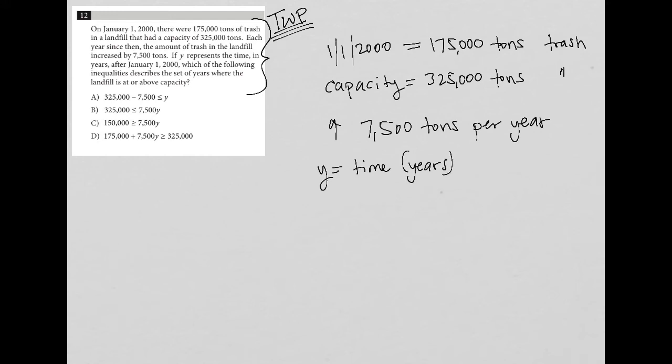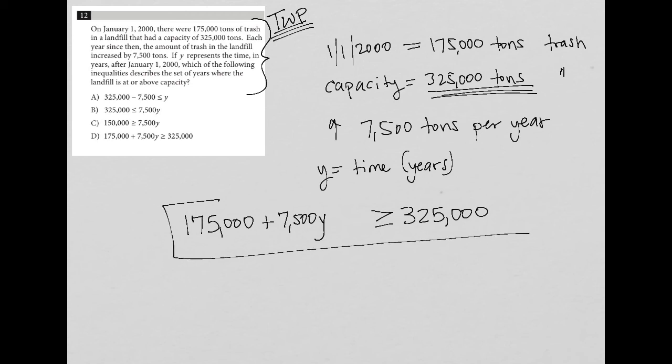Which of the following inequalities describes the set of years where the landfill is at or above capacity? Well, to be at or above capacity, and we're talking about inequality, I need to be greater than or equal to capacity. So that'd be greater than or equal to 325,000 tons. So how do I get there? I would only get there by having the amount of trash that I have now, so 175,000 tons. And then plus, I'm adding 7,500 tons to that for every year. So multiply that by Y. And then I only want this to be true, or I only care about this equation or inequality, once it's greater than or equal to capacity. So greater than or equal to 325, which is choice D.